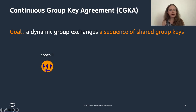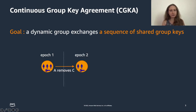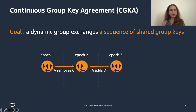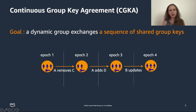At any point in time, any group member can decide to change these properties, which means they create a new epoch. For example, Alice removes Charlie — this creates a new epoch with a new key unknown to Charlie. Then maybe she adds Dave. Another thing that can happen is that Bob simply decides to refresh his secrets because maybe they have been lying around for too long.